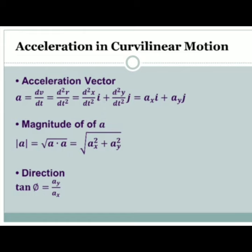In acceleration in curvilinear motion, the acceleration vector A equals dv/dt equals d²r/dt² equals d²x/dt² i plus d²y/dt² j, which equals ax i plus ay j.